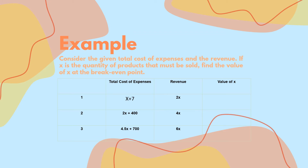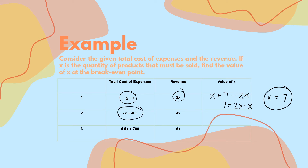Consider the given total cost of expense and the revenue. If x is the quantity of product that must be sold, find the value of x at the break-even point. Para lang tayo nag-algebra — i-equate nyo lang sila sa isa't isa. So, you have x plus 7 and 2x. To find the value of x, we equate them: 7 is equal to 2x minus x, so x is equal to 7. These other two questions, you can try at home.